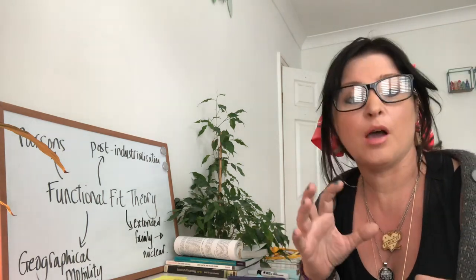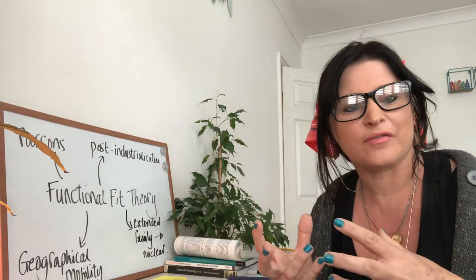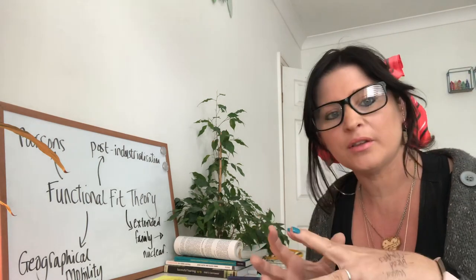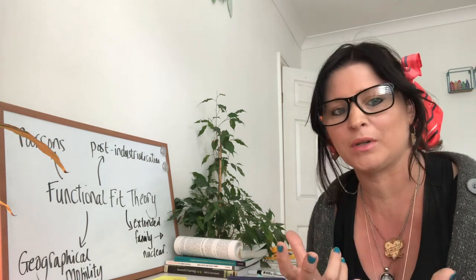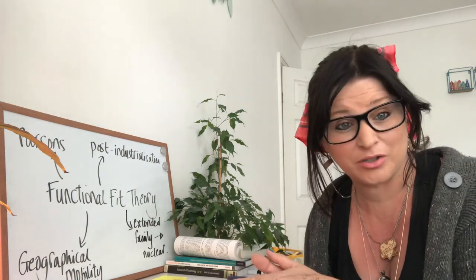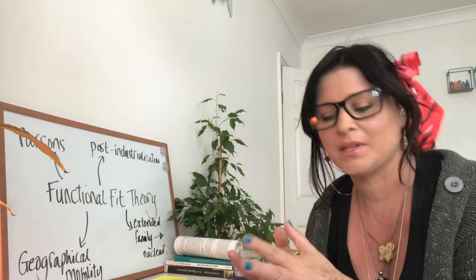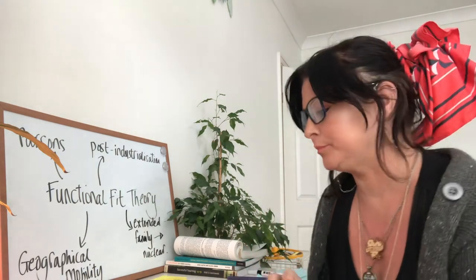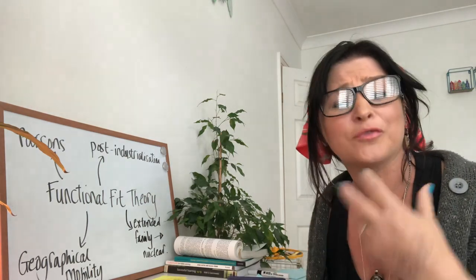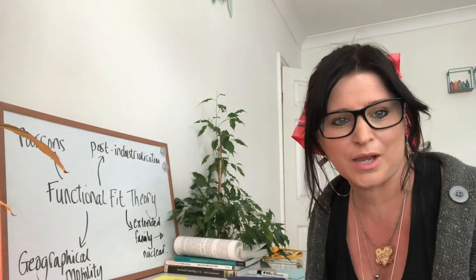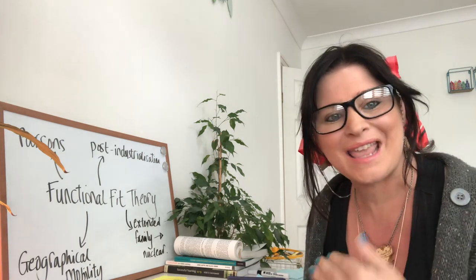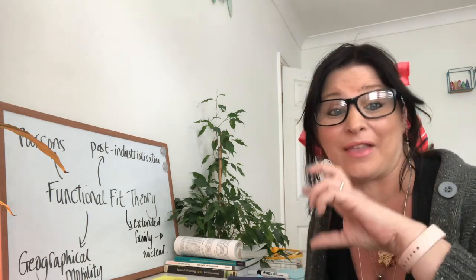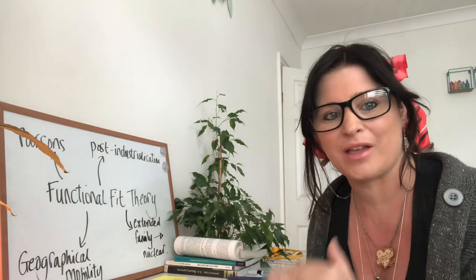This is Talcott Parsons' theory on how the shape and structure of the family has had a functional fit to fit the needs of the economy over the last couple of hundred years. We're going to look at the theory, the key concepts you need to talk fluently about, and then the evaluation, limitations, and criticisms so that you're able to reach those AO3 marks. Remember, before critiquing you've got to speak fluently using sociological language, then analyse the impact before moving to criticisms — that's how you get analysis and evaluation marks and reach the top mark band at A level.